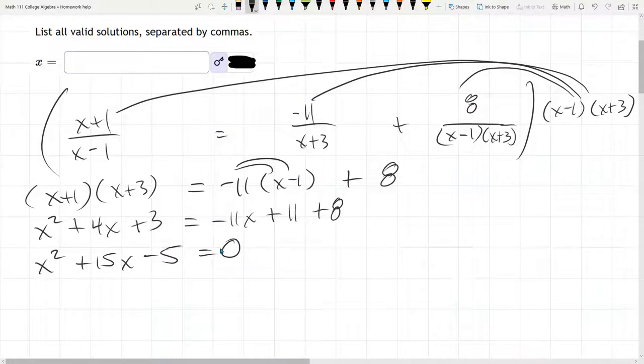That's some bad math. We need to subtract 19. So 11 plus 8 is 19. We need to subtract that 19. So it's 3 minus 19 is negative 16. x squared plus 15x minus 16 equals 0.